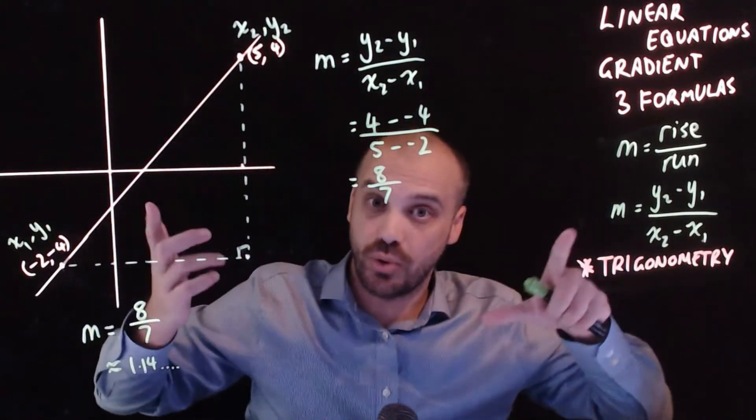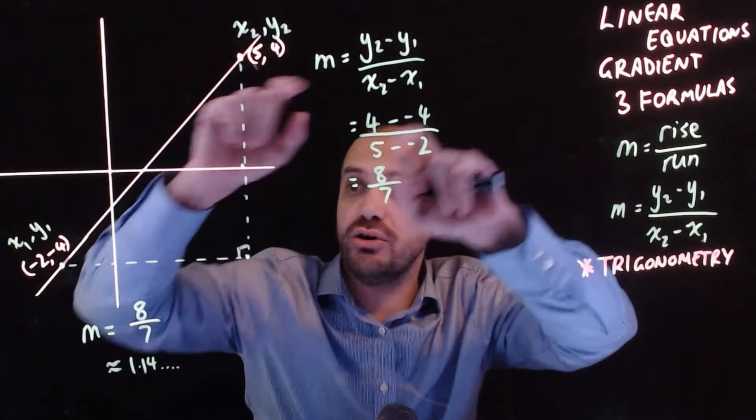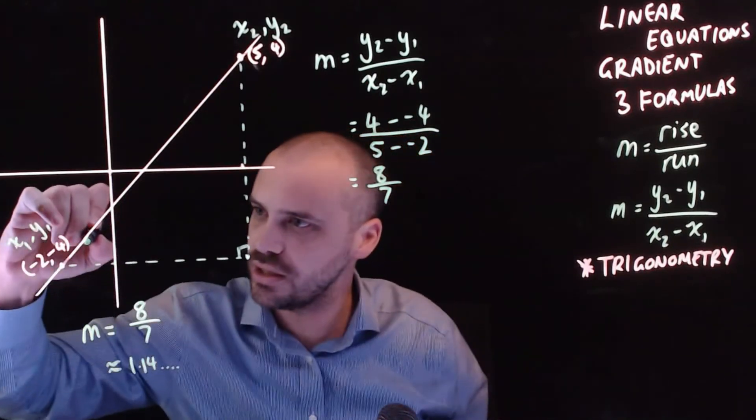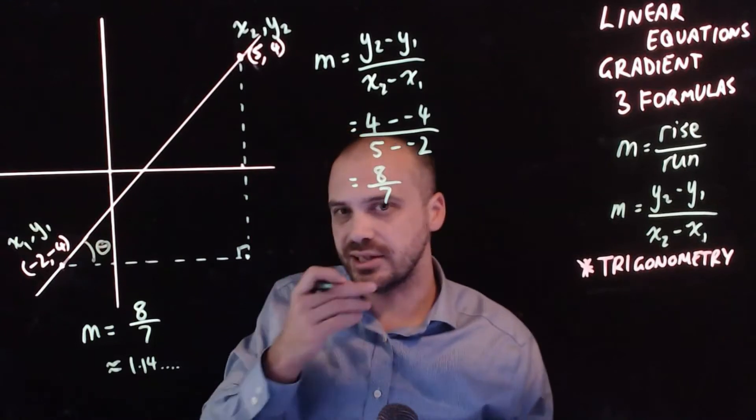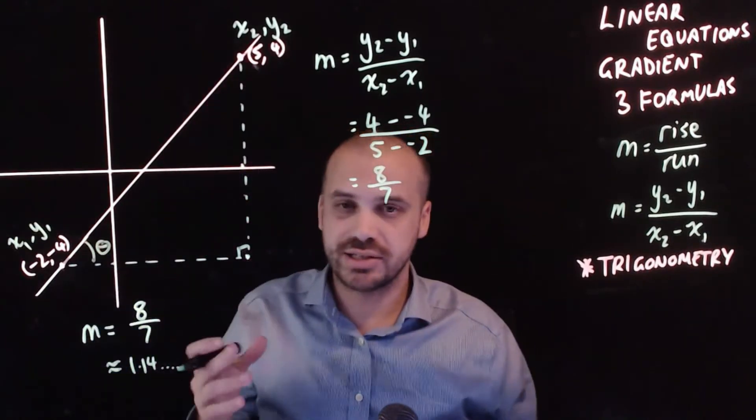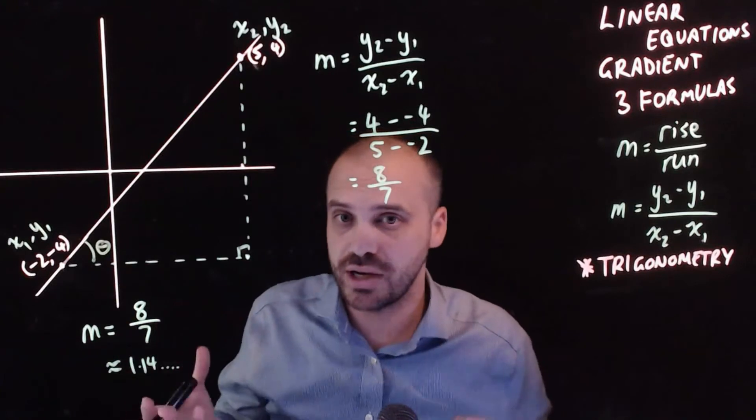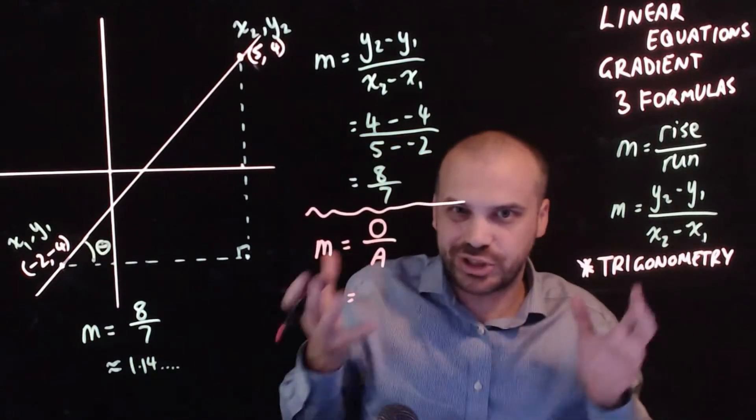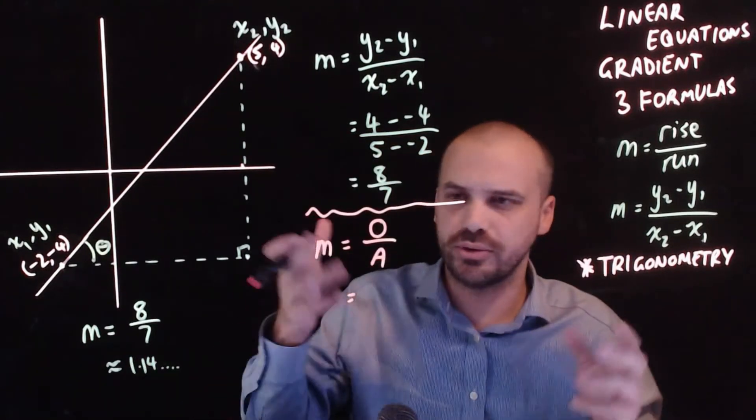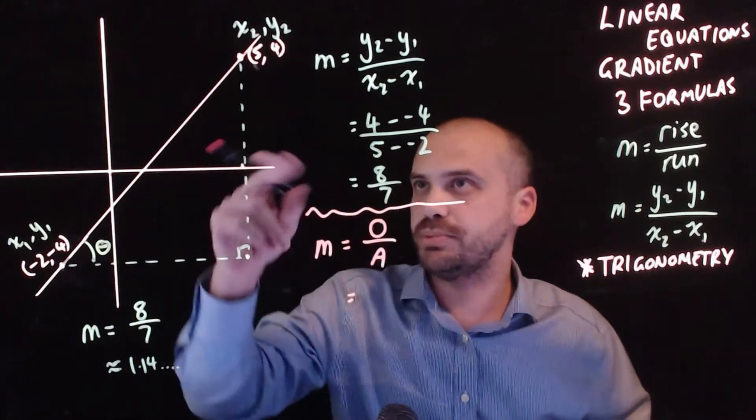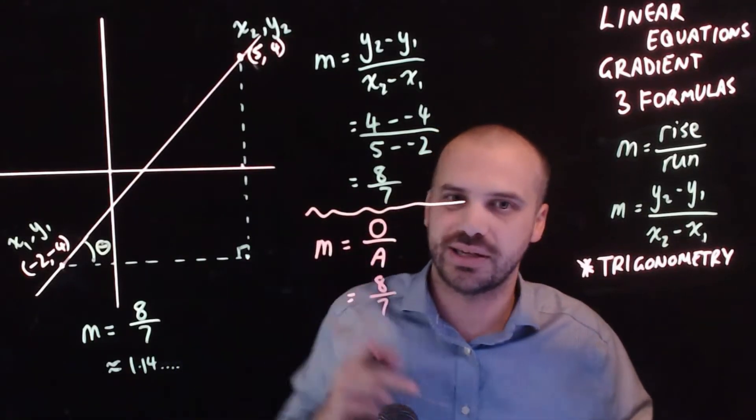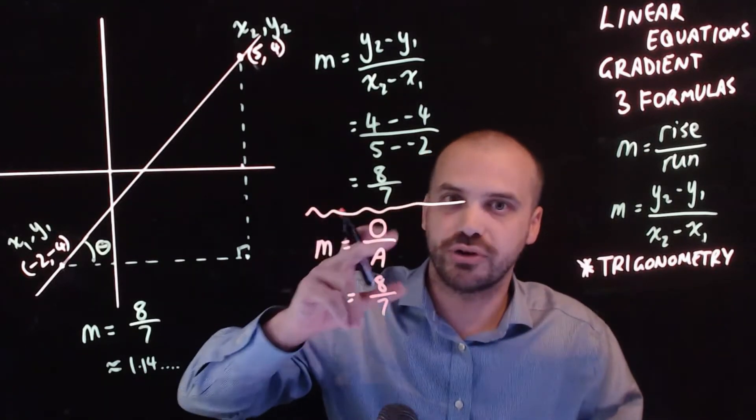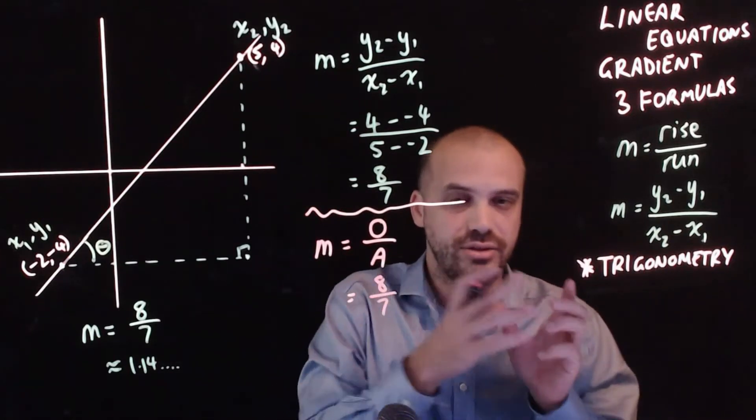We did rise over run. We did y2 minus y1 which just calculates the rise over run. Okay when it comes to trigonometry I can draw in an angle here and suddenly m rise over run doesn't become rise over run anymore. It becomes opposite over adjacent. So far I haven't actually changed anything. I don't have a new formula. All I have is just different labeling. Opposite is obviously 8 here and adjacent is equal to 7. But think about your trigonometry. Opposite over adjacent equals tan theta.